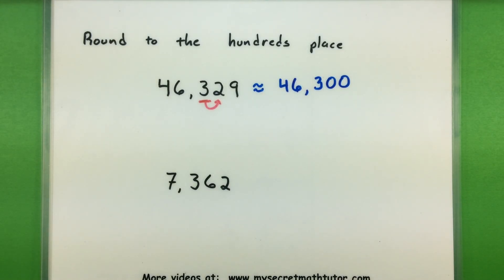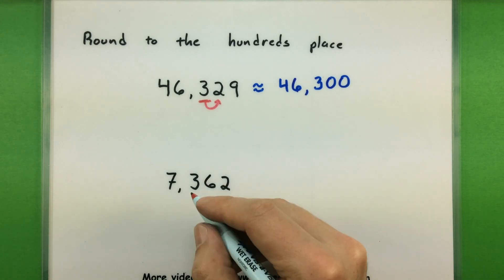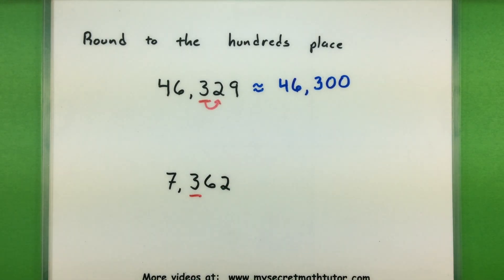Let's give this another try with the next number. Same idea—we want to also round this one to the hundreds place. So I have ones, tens, and then hundreds. I'm just going to underline that.